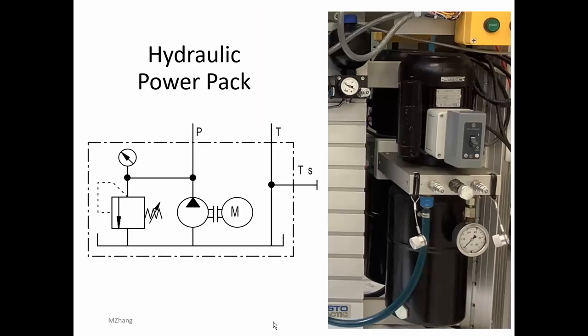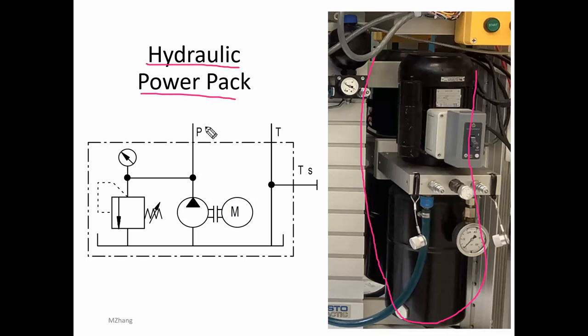Let's look at hydraulics. So far, everything I've shown you is pneumatic. With hydraulics, like I said, it's hydraulic oil we use to transmit power. This is the unit we have on the trainer. This is the symbol to represent this whole power pack — we call it a hydraulic power pack. It has two ports: a P port and a T port.